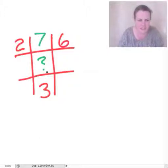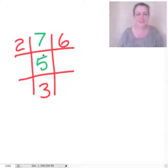7 and 3 is 10, and therefore the number in the middle here is going to be 5. Are you okay with that?